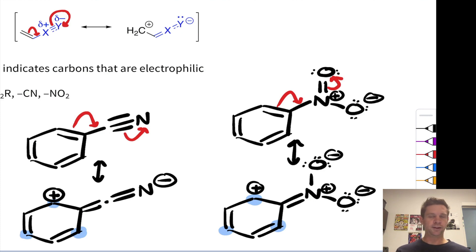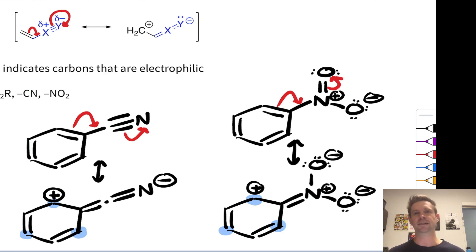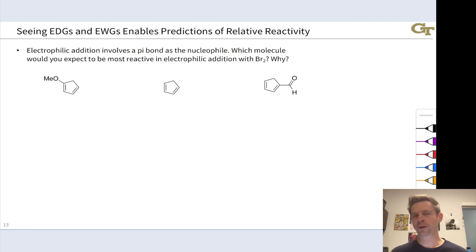The nitro group is a little structurally complicated, but don't get too tripped up on it. Notice that N+ and O- remain the same in all of these resonance forms — they're kind of along for the ride. It's the N-O double bond inside the nitro group that really makes it pretty strongly electron withdrawing.